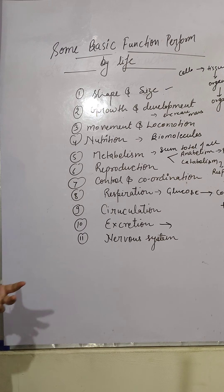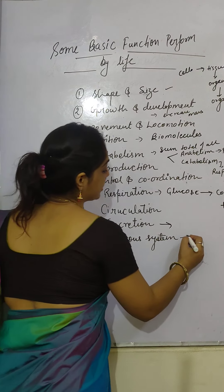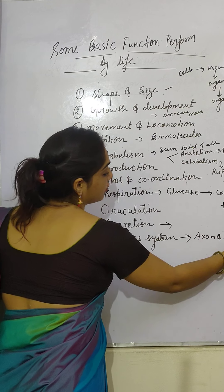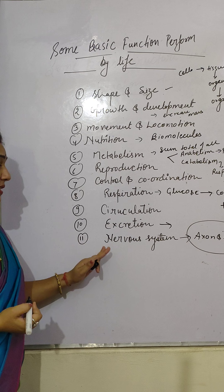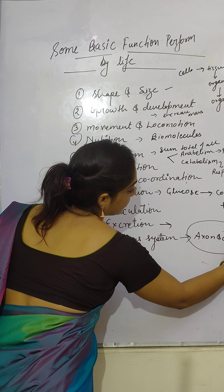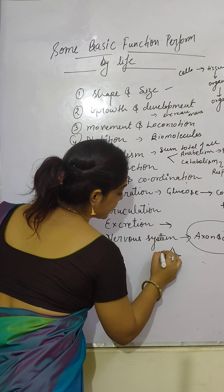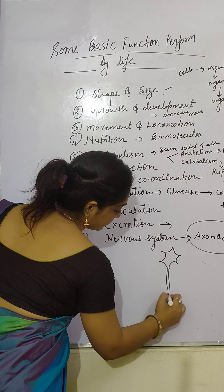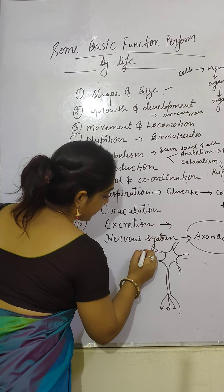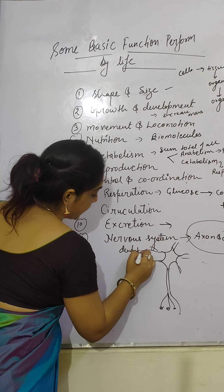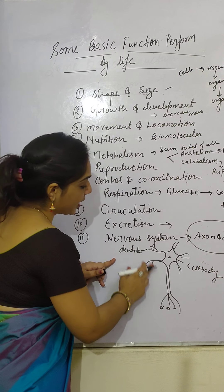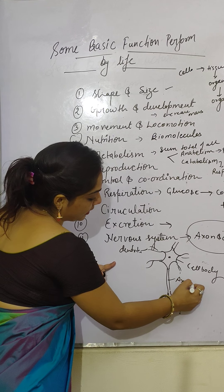Next is the nervous system. It helps all other systems work together and receives information. The nervous system consists of axon and dendrites. Dendrites receive messages and transfer them to the cell body, and from the cell body the signal goes to the axon and then to the axon terminal.